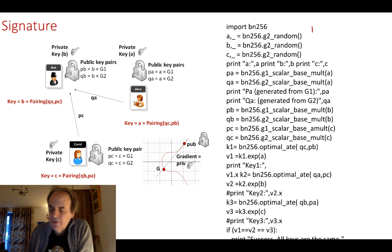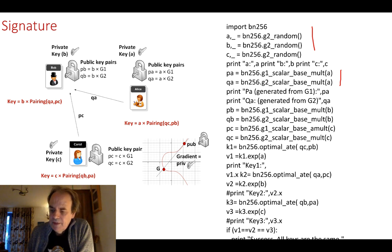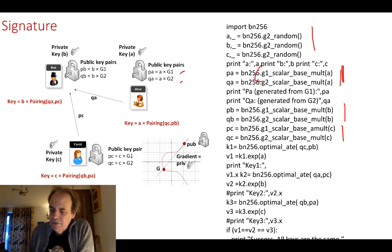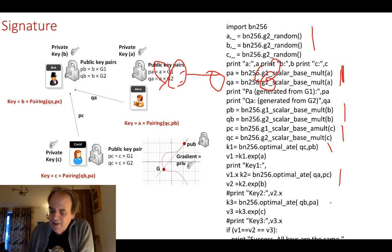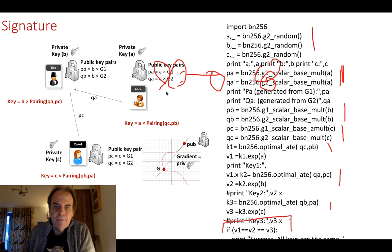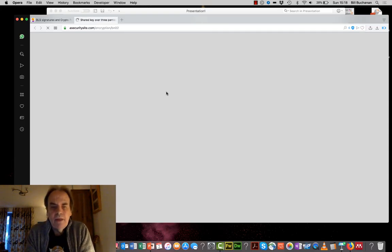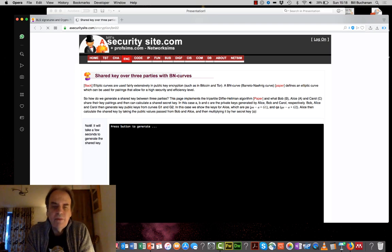Here is the code that does this. We generate random values for A, B, and C. We calculate each party's public key values — Alice's PA and QA, Bob's, and Carol's — by multiplying their secret value by G1 and G2. We then exchange values, perform the pairing calculations, and hopefully all three end up with the same shared key. If so, we get a confirmation message that everything is correct.